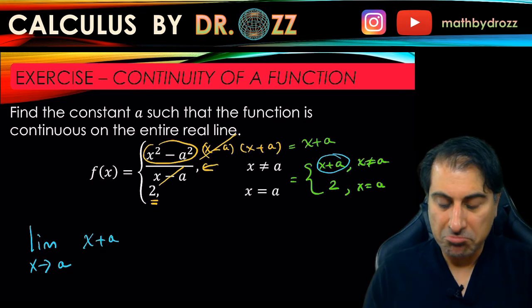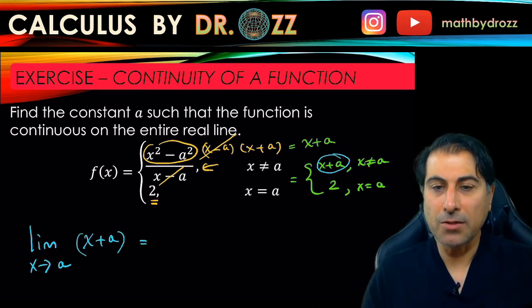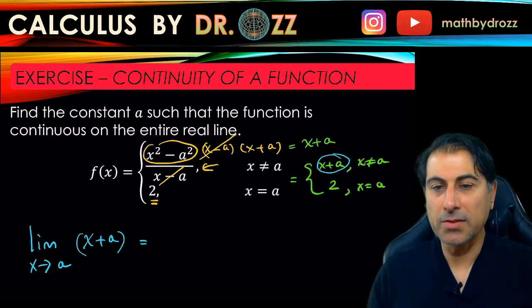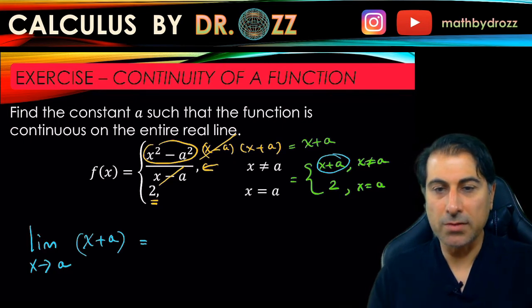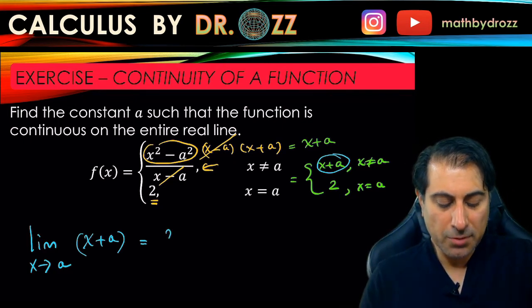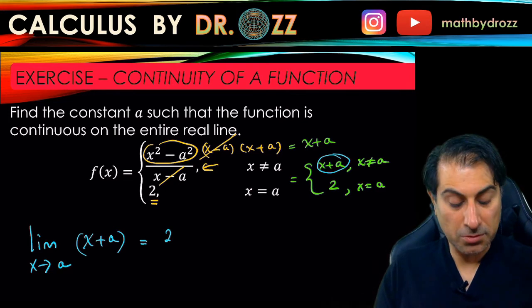This is the limit of a polynomial. All we're going to do is replace x by a as a result of direct substitution. So we're going to have the limit value to be exactly equal to 2a.